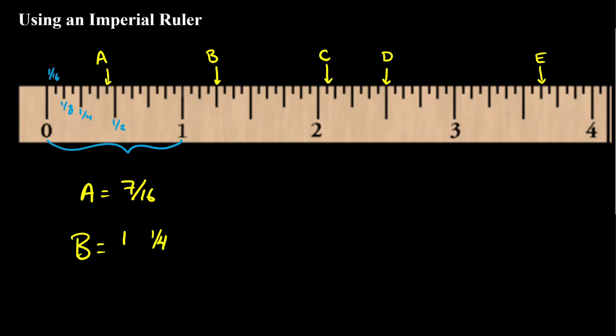So b is the length from zero to whatever b is, is one and one quarter inches. Another way of thinking about it is it's one and one, two, three, four. So one and four sixteenths of an inch. But four sixteenths of an inch reduces to one quarter. So it depends on how familiar you are with the imperial system.